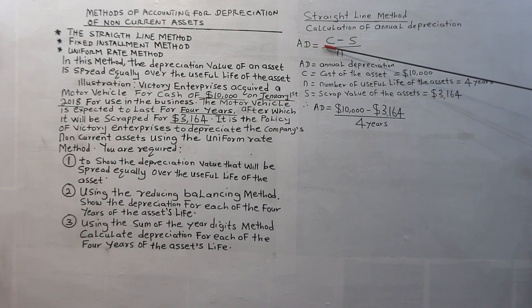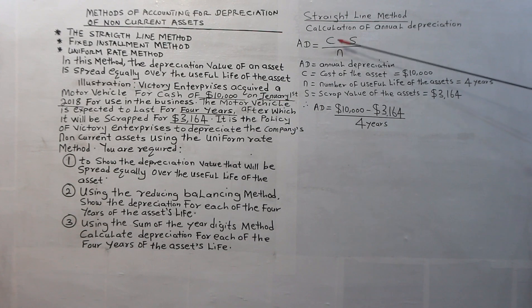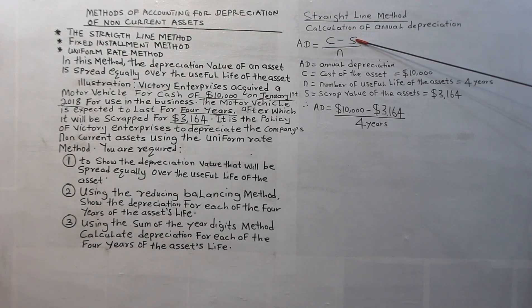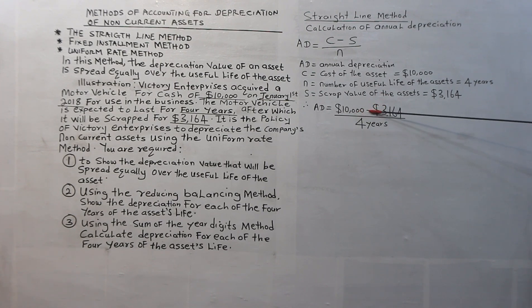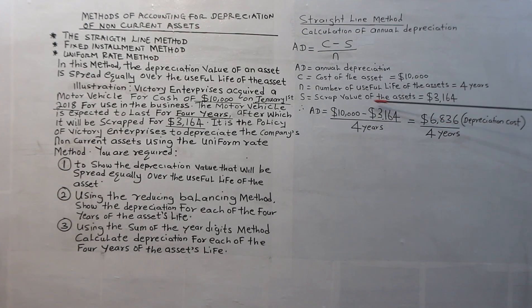The annual depreciation is C minus S divided by N. Annual depreciation equals $10,000 minus $3,164, divided by 4 years. The cost minus scrap value gives us $6,836, which is known as the depreciation cost. The scrap value of $3,164 is the amount that will be recovered at the end of the useful life of the motor vehicle when it is sold. Therefore, since this amount will be recovered, the depreciation cost is $10,000 minus $3,164, which equals $6,836.